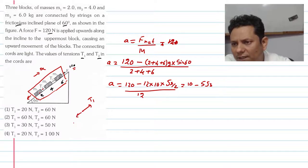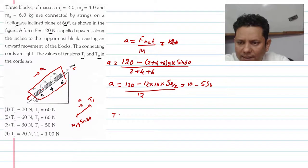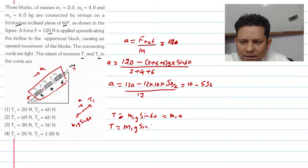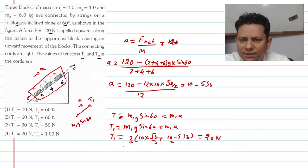For T1, we consider the lowermost block. T1 minus M1 g sin 60 equals M1 A. So T1 equals M1 g sin 60 plus M1 A. T1 equals M1 common, which is 2 multiplied by 10 sin 60 plus acceleration 10 minus 5 root 3. The 5 root 3 terms cancel, so T1 equals 2 multiplied by 10, or 20 N. So you have T1.